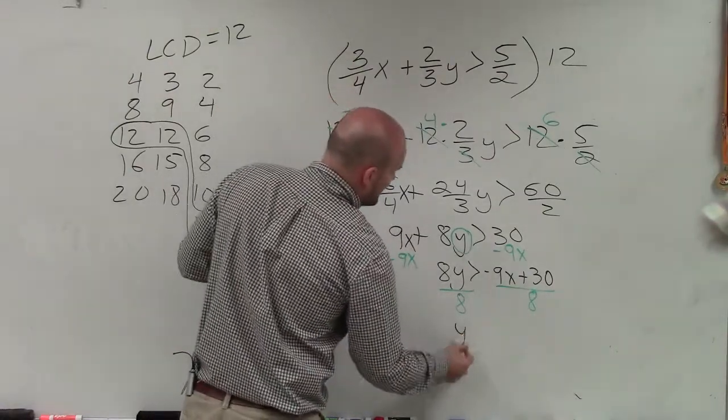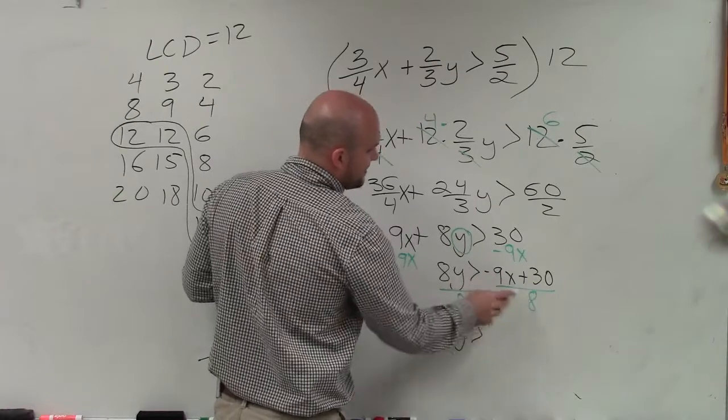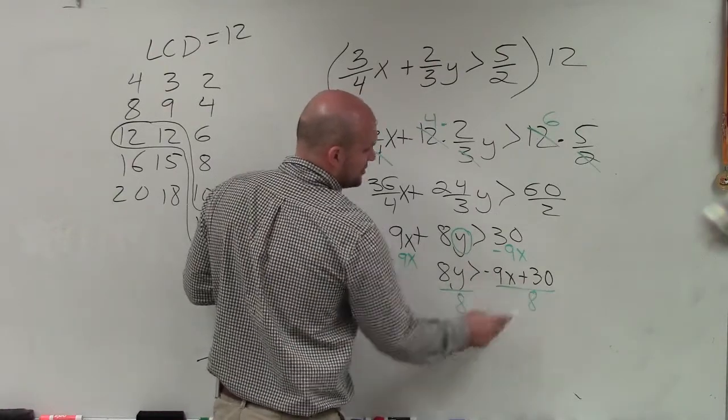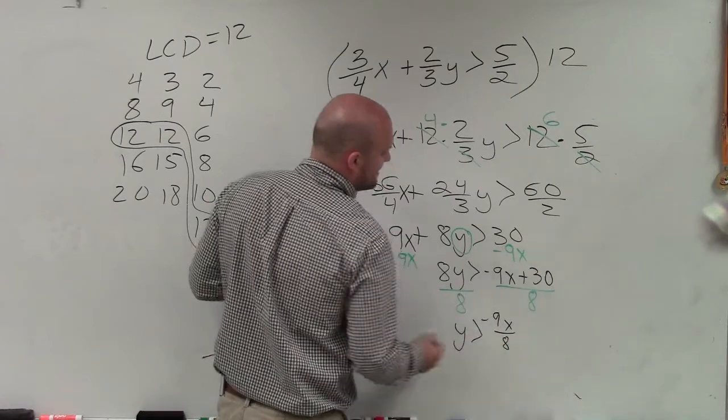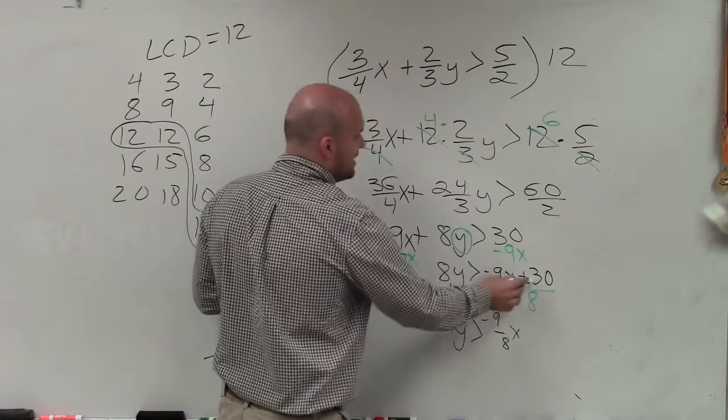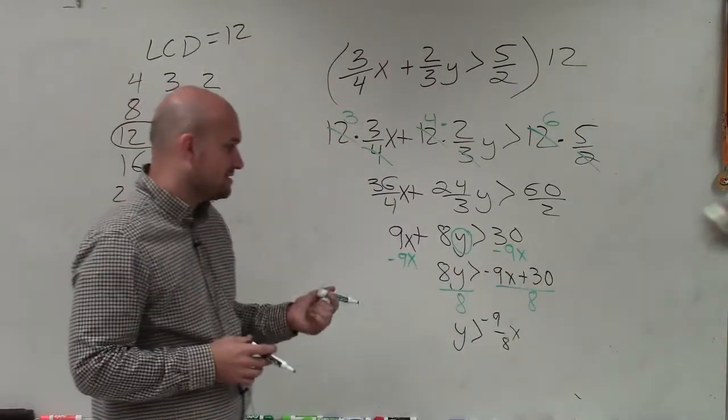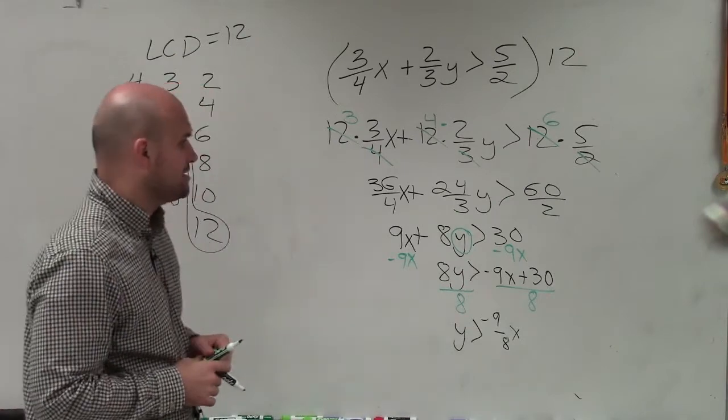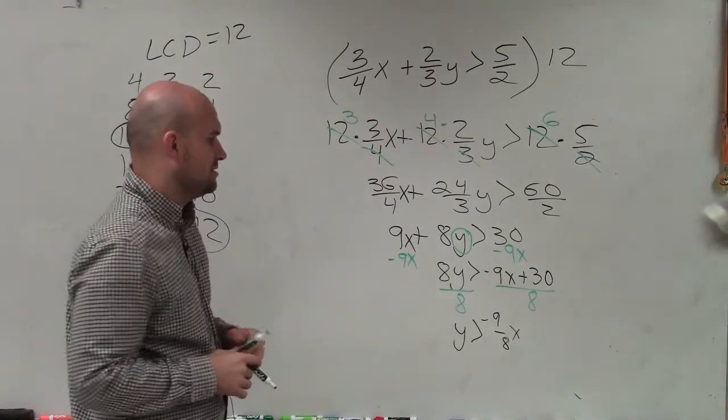So therefore, I have y is greater than, now negative 9x divided, you've got to make sure you divide the 8 into both of those terms, so therefore I have a negative 9 over 8 times x. And then 8 does not evenly divide into 30. It does get in there pretty close, but it goes in there at least three times with 6 over 8.